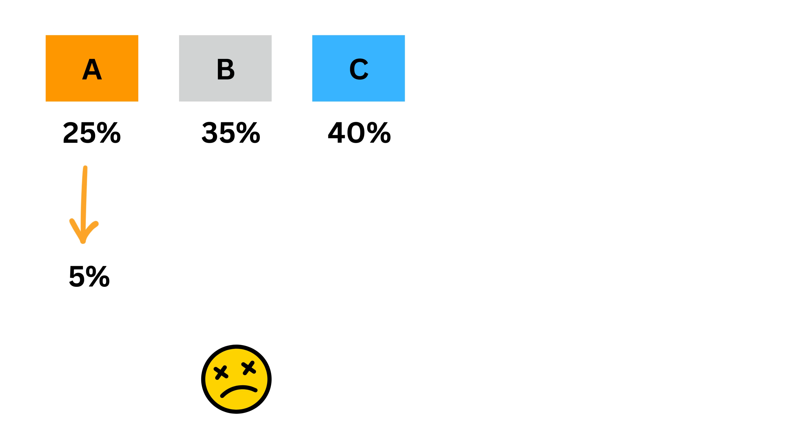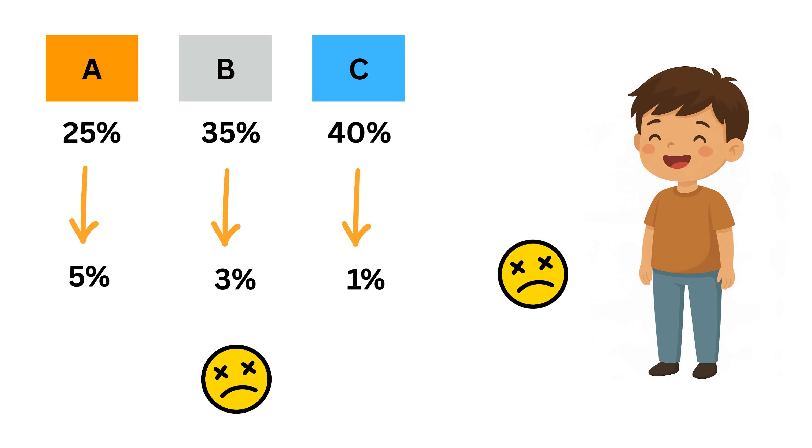5% of Machine A items are defective. 3% of Machine B items are defective. And only 1% of Machine C items are defective. Now suppose we close our eyes and randomly pick an item, and it turns out to be defective. The big question is, what is the probability that this defective item actually came from Machine C?